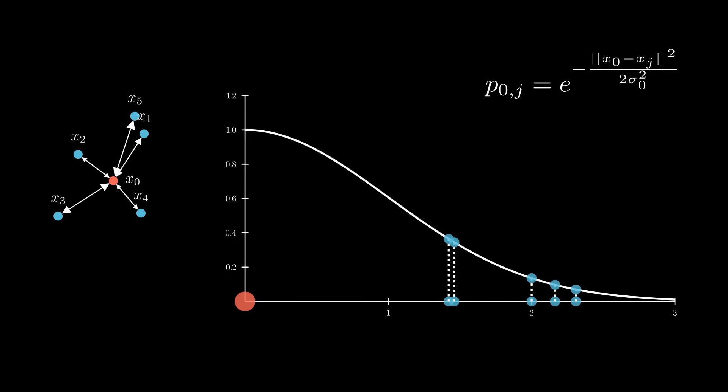If you know a bit about Gaussians, you'll know that the shape of the bell curve changes based on the variance sigma. The shape of this Gaussian is crucial because if it's wider, more points will be considered as neighbors of the red point. And if it's narrow, only the closest points will be considered as neighbors. We adjust the variance of this Gaussian using a hyperparameter called perplexity, which we'll talk about later.